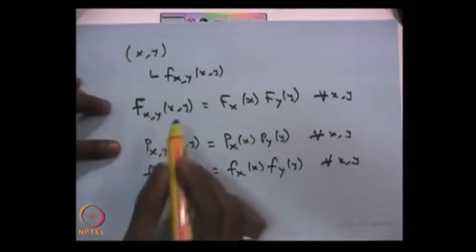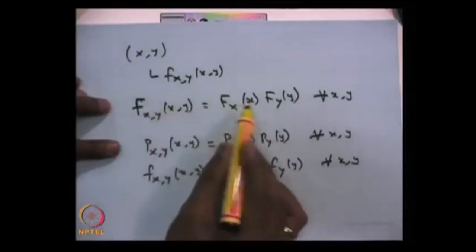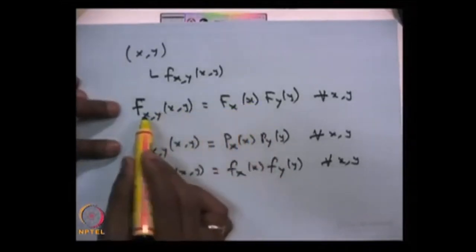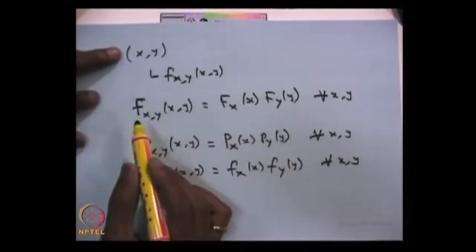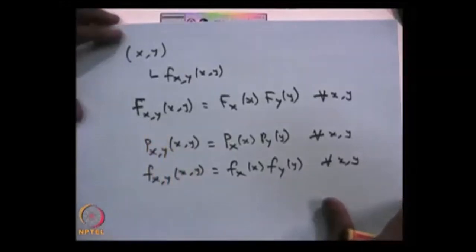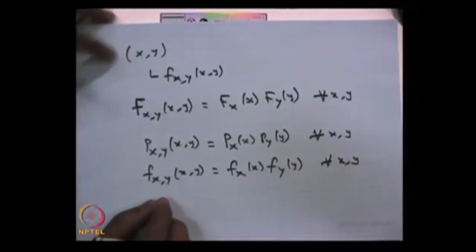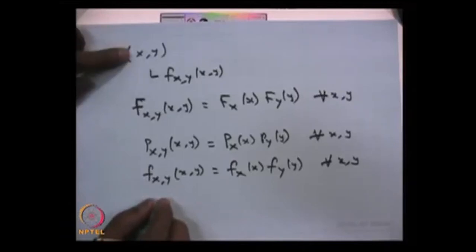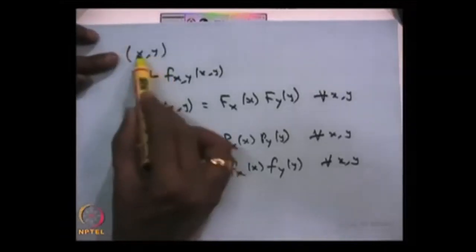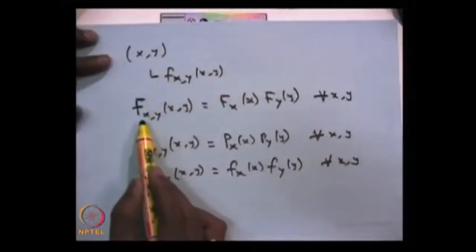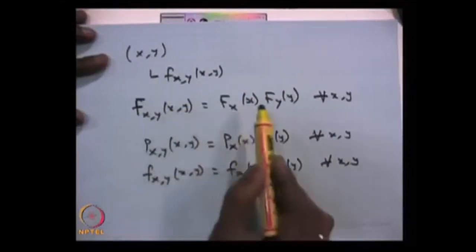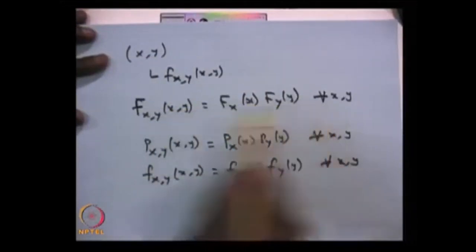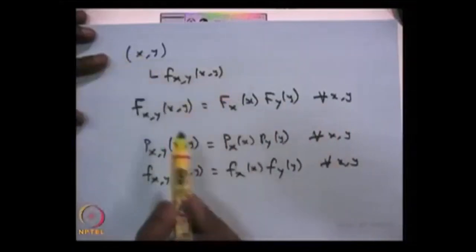Whether it is discrete or continuous, you can always check at the CDF level. If the joint CDF and the individual CDFs satisfy this product property, then you can conclude both random variables are independent. This logic can be extended to any n random variables. If the joint CDF of an n-dimensional random variable is the product of individual CDFs, then you can conclude all n random variables are mutually independent.